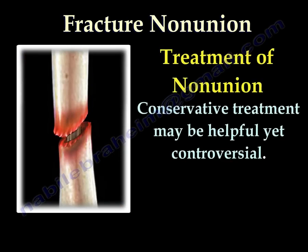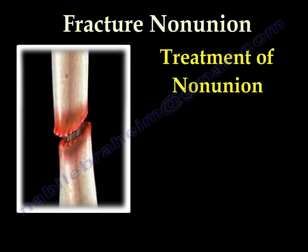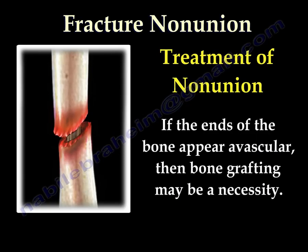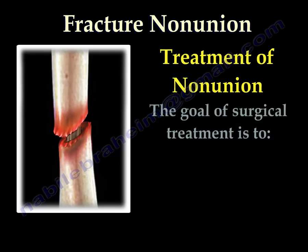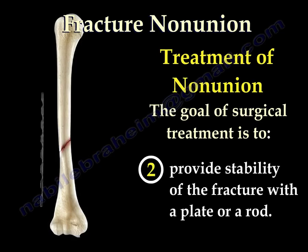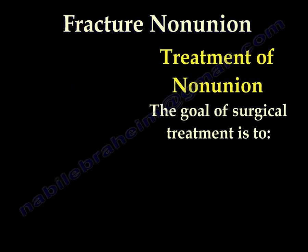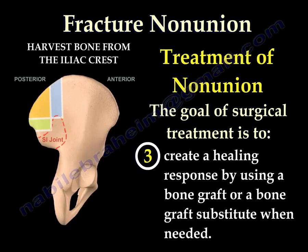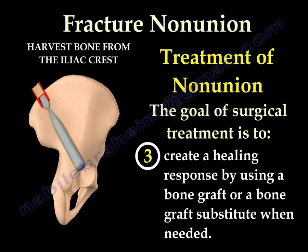Treatment of non-union: conservative treatment may be helpful yet controversial, such as bracing or electric stimulation. Most non-unions require surgical treatment. If the ends of the bone appear avascular, then bone grafting may be necessary. The goals of surgical treatment are: number one, restore vascularity of the bone; two, provide stability of the fracture with a plate or a rod; three, create an atmosphere of a healing response by using bone graft or a bone graft substitute when needed.